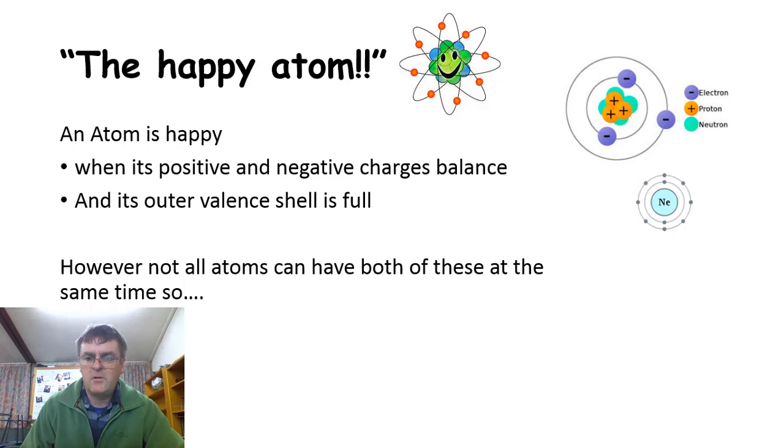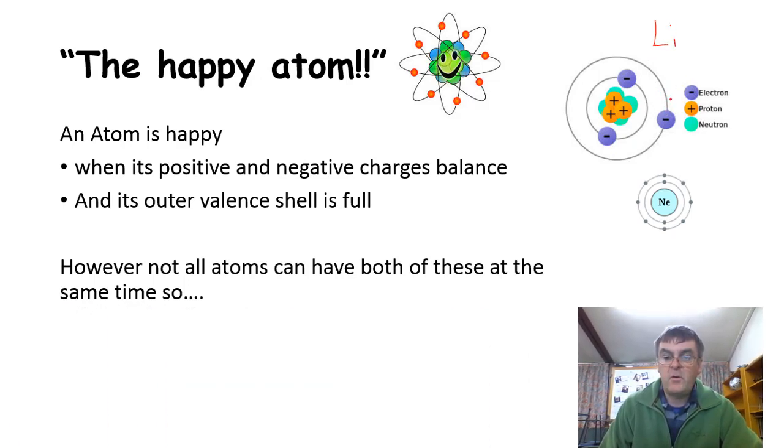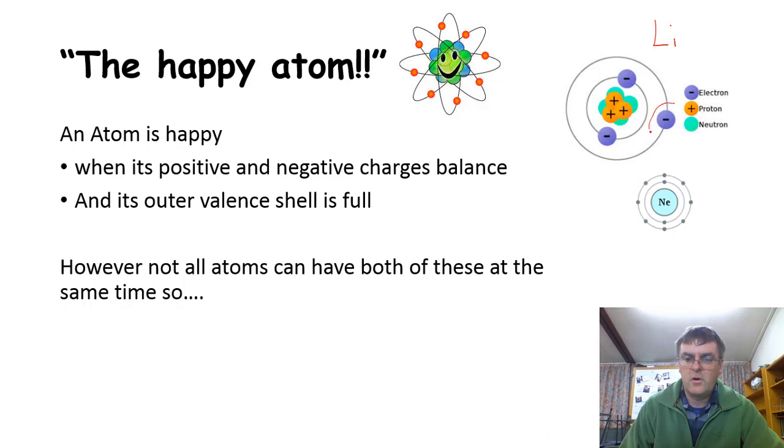So for example, this one up here, it's only got one in the outside here. This is element number three, which is actually lithium. And it's a very reactive metal because it's only got one in the outside valence shell. It's very reactive. Because if it can't have both, it goes for a full outside shell.